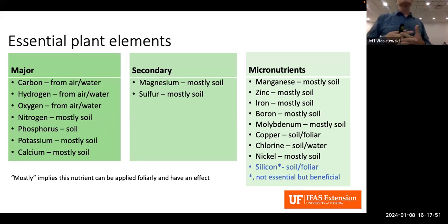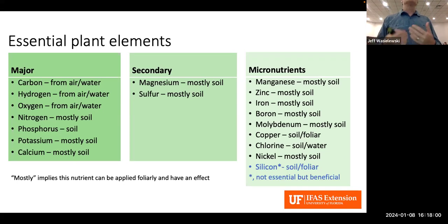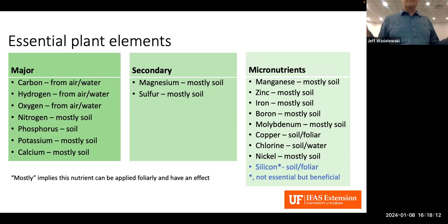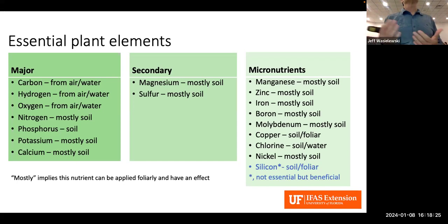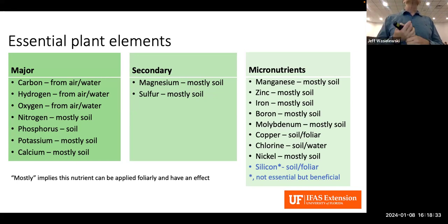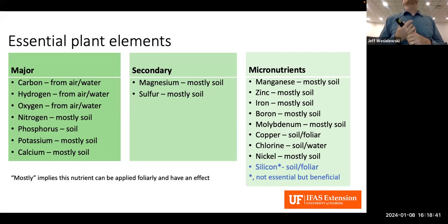Essential plant elements are those that plants need in order to complete their life cycle — without them plants will not perform, and in some cases may not survive. The major elements are carbon, hydrogen, and oxygen, which they get from the air. Nitrogen, phosphorus, potassium, and calcium are the major elements taken up mostly through the soil. Secondary elements include magnesium and sulfur, also mostly taken up through the soil, although you can apply them foliarly.